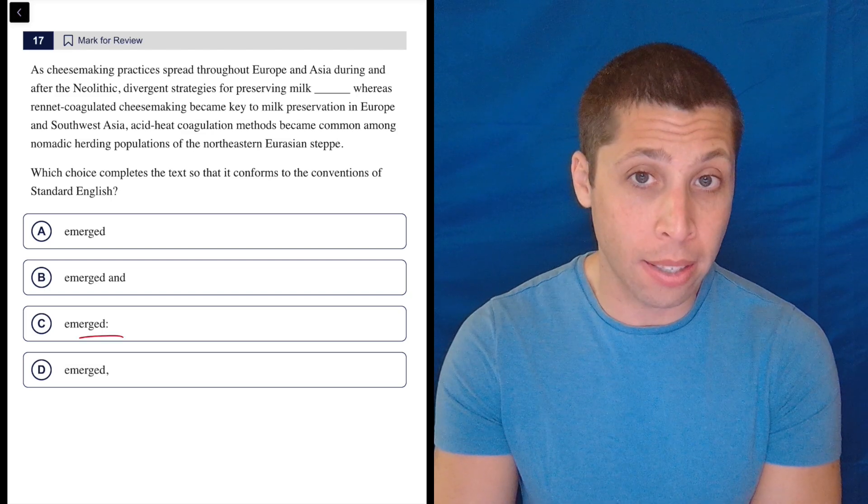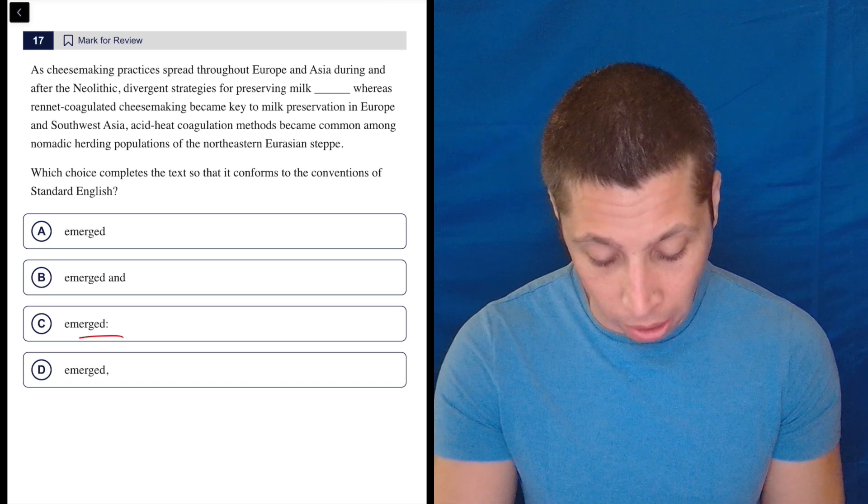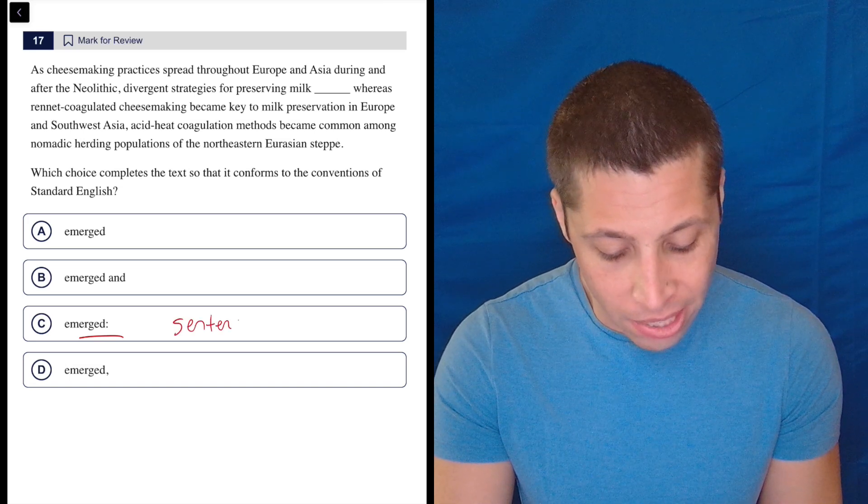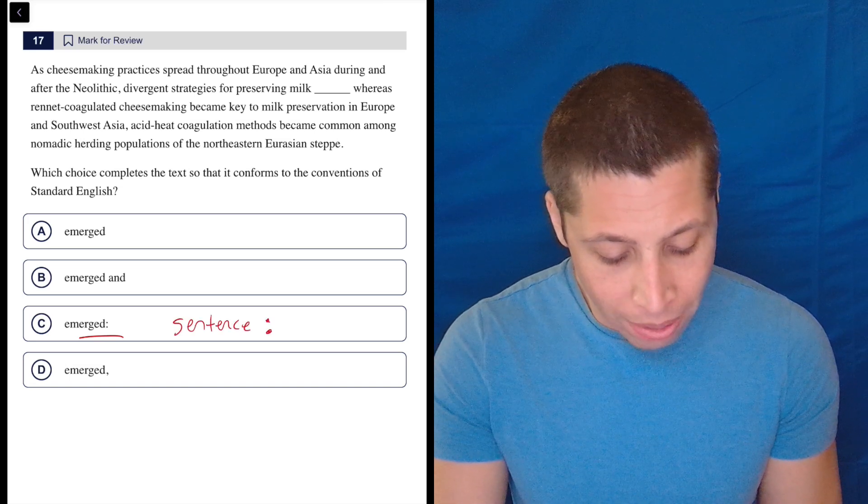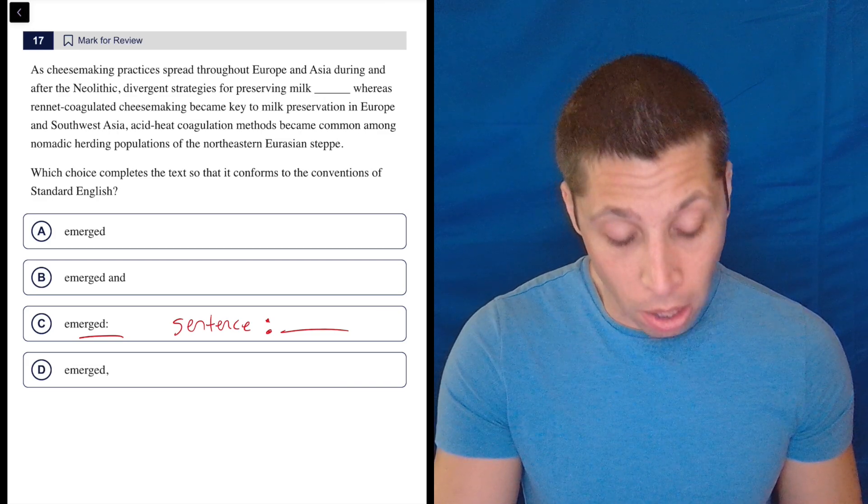The colon is the only one here that really stands out as having a very strict rule that we need to follow for our sentence structure. We really want to have a complete sentence before the colon. We have some flexibility for what comes after - it could be a sentence, it could be a clause.